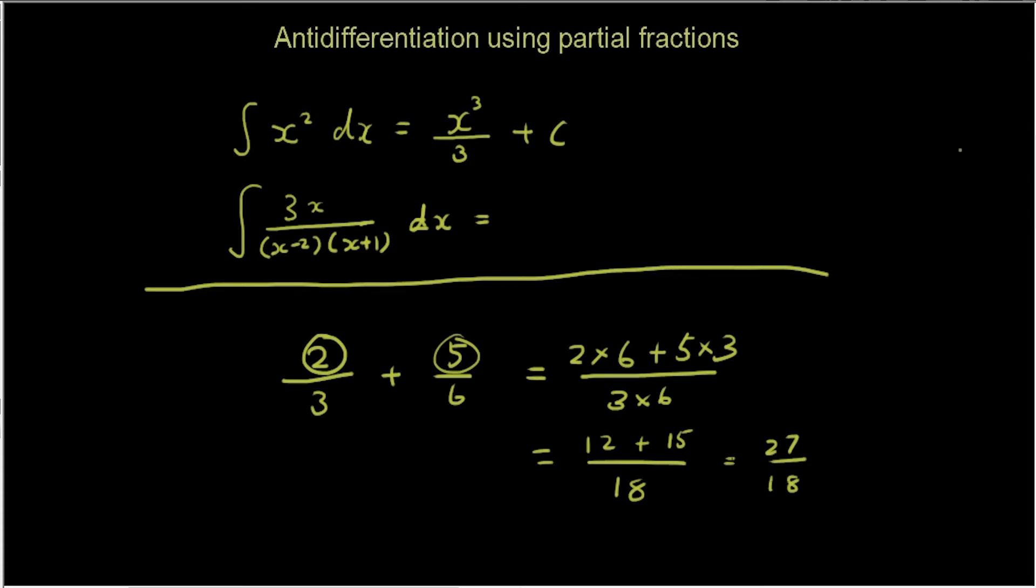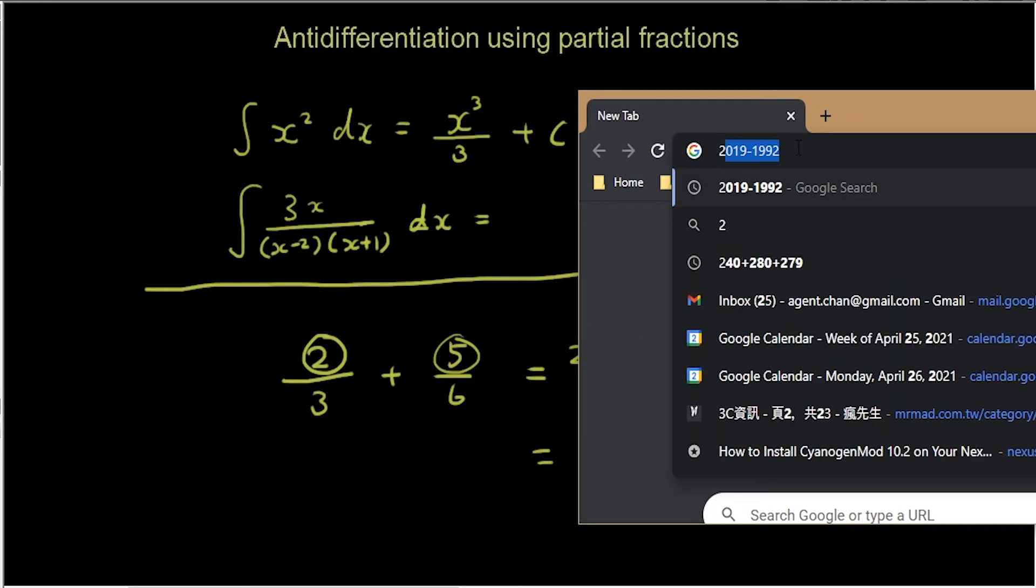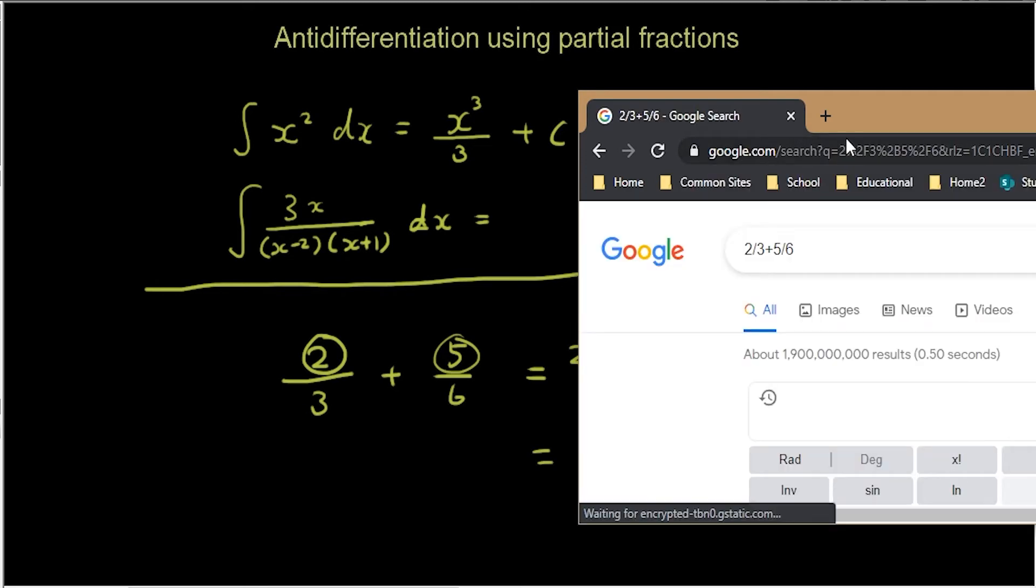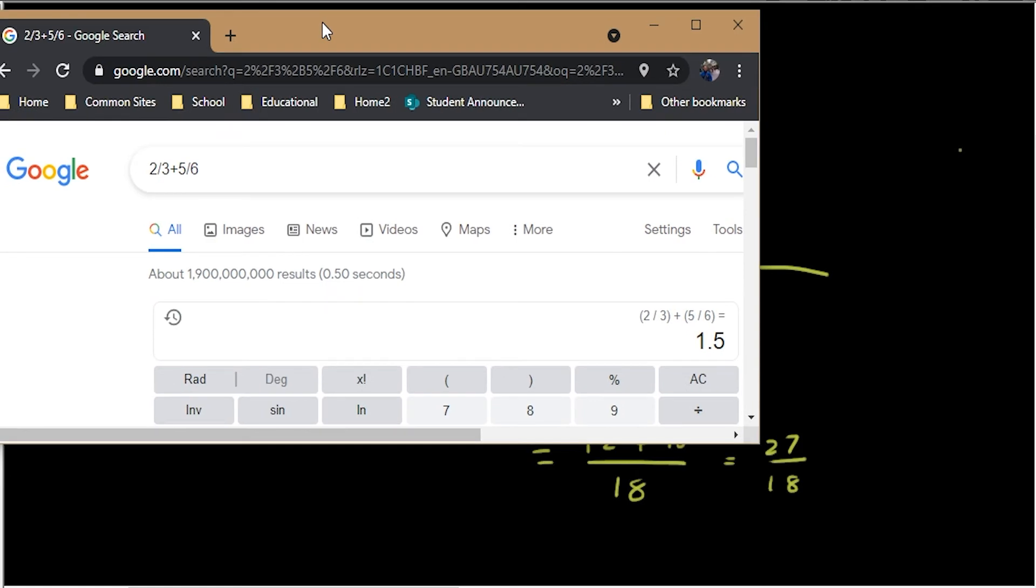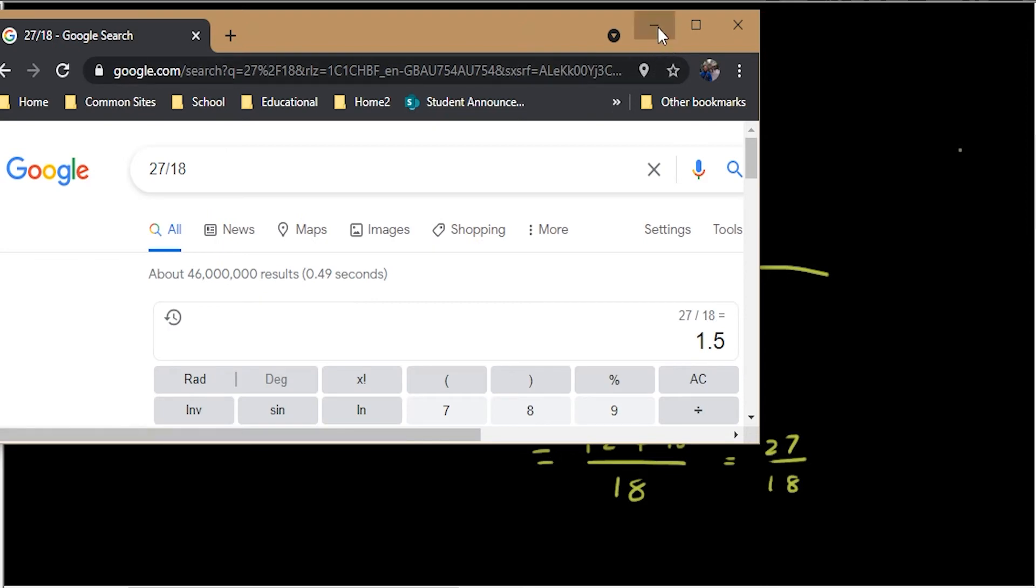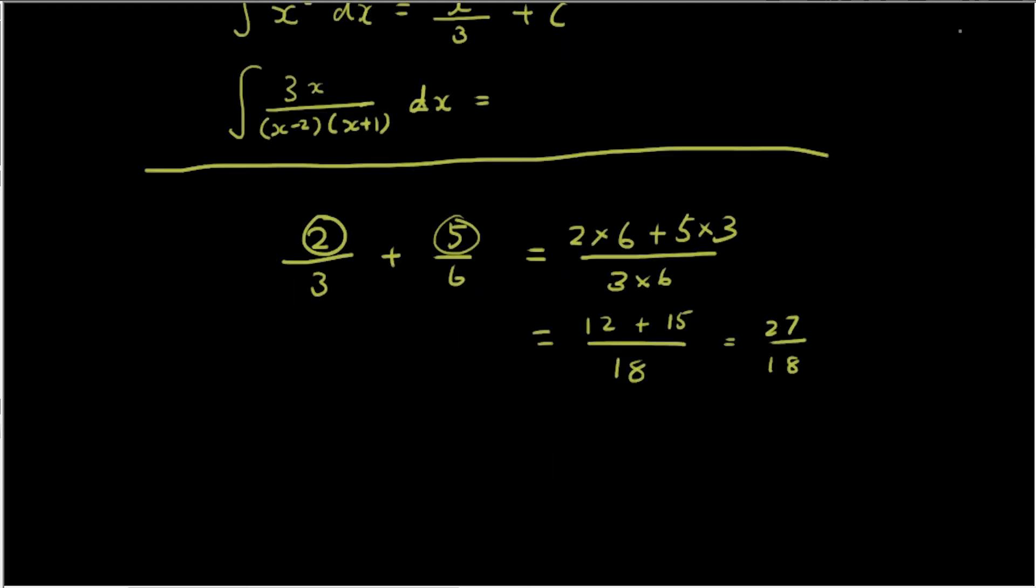Just to make sure you guys believe me that that's the answer, I'm going to put that into Google. So 2/3 + 5/6 is 1.5, and 27/18 is also 1.5. That's definitely the answer. So that's doing it a very long way, but it shows you the structure of how to add two fractions.